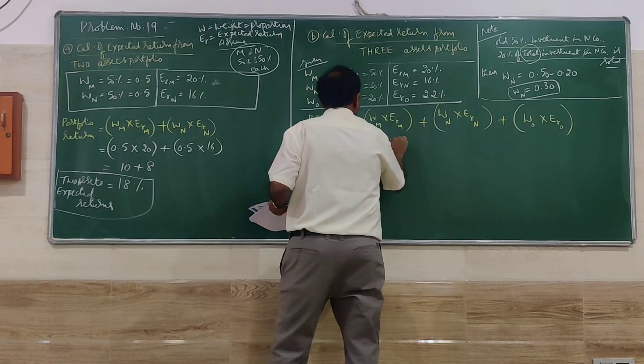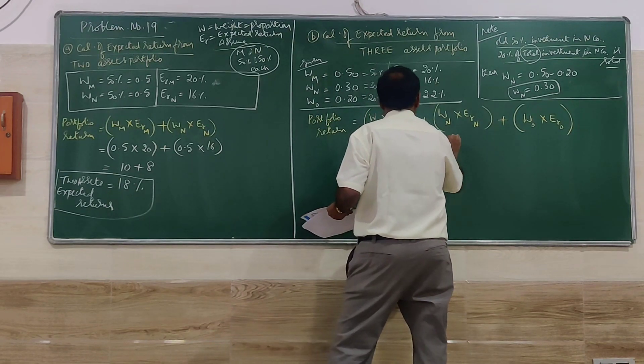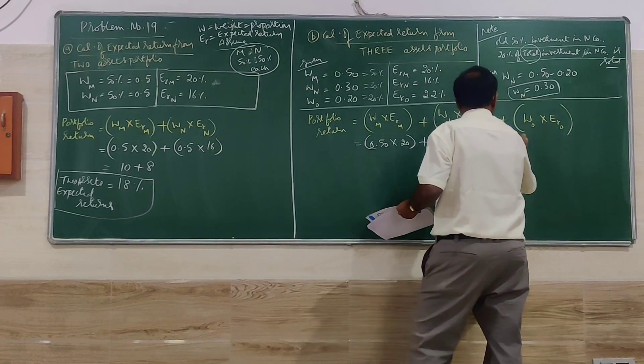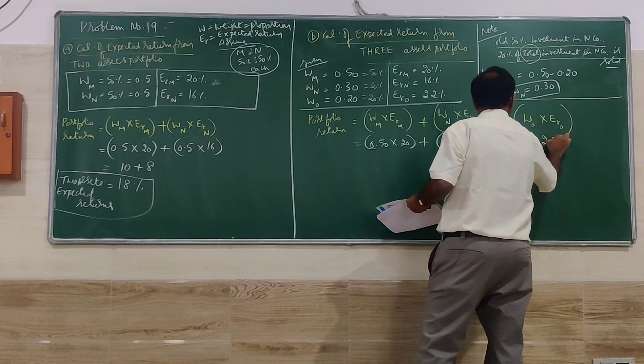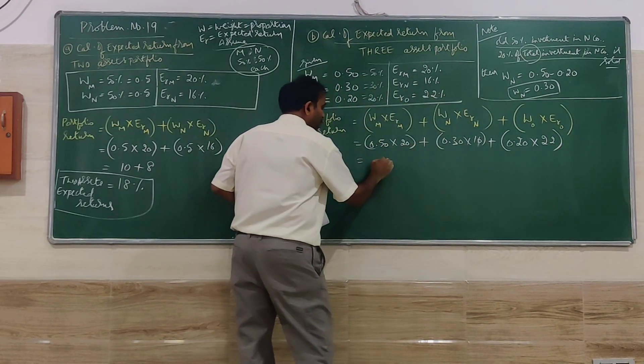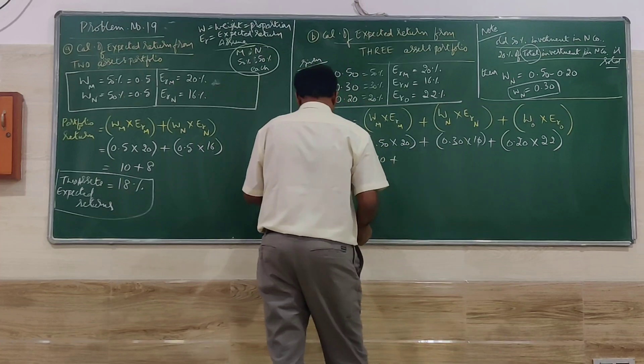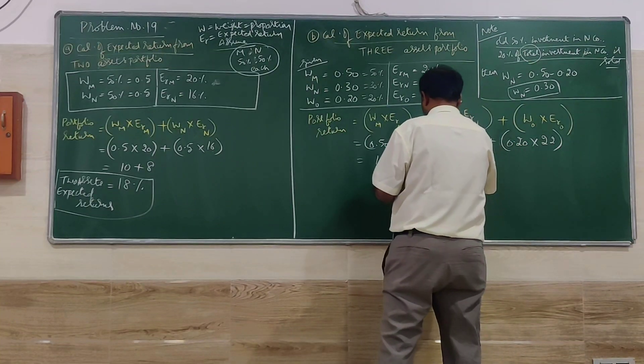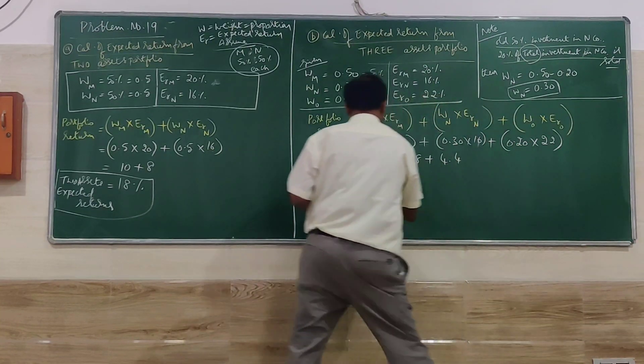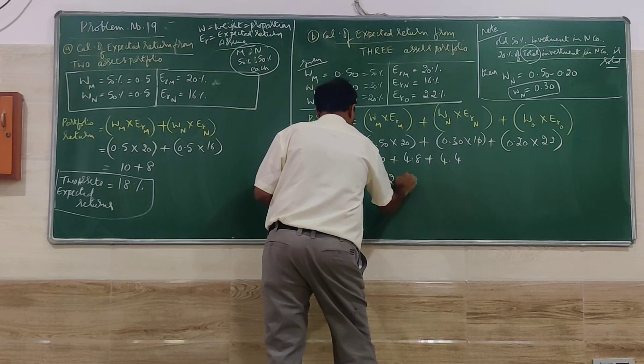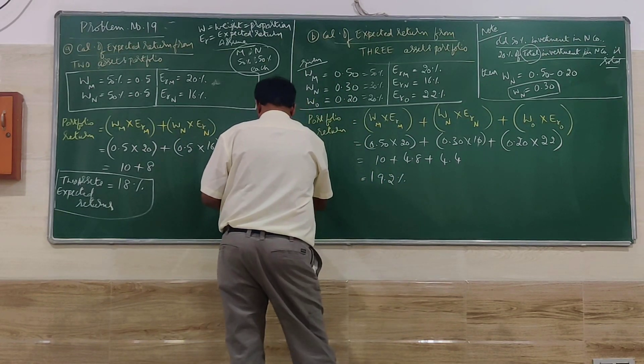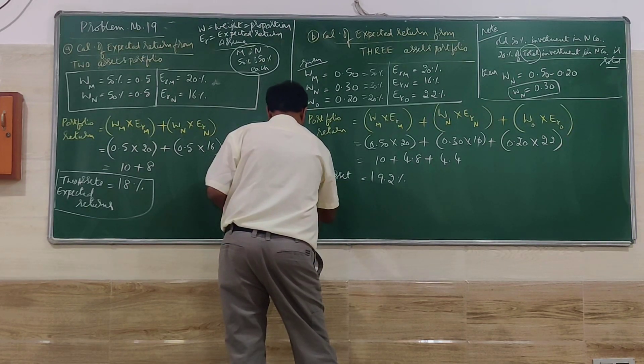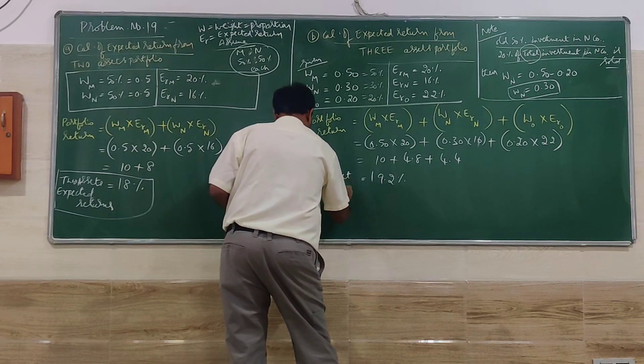0.5 into 20, 0.3 into 16, 0.2 into 22. 0.5 into 20 is 10, 0.3 into 16 is 4.8, 0.2 into 22 is 4.4. That gives us 19.2% as the 3-asset expected return.